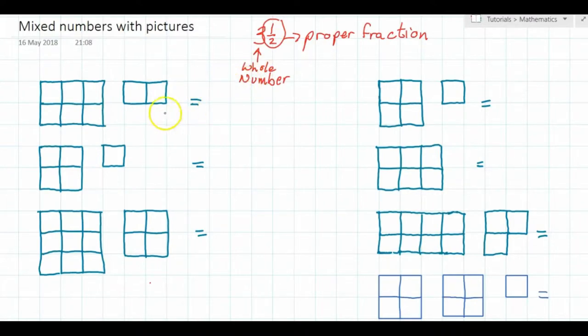We're going to go through some pictures down the side here and see if we can work out what the mixed number is that goes with the picture. So we have 1, 2, 3, 4, 5, 6 here and you can clearly see that it's a complete set, so that represents 1.